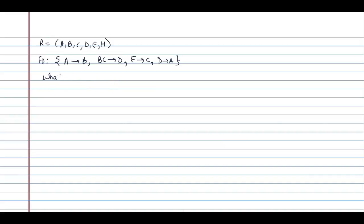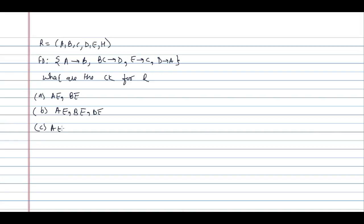They are asking what are the candidate keys for the relation. Option A: AE, BE. Option B: AE, BE, DE. Option C: AEH, BEH, BCH. Option D: AEH, BEH, DEH. These are the options and this is also a previous year question.